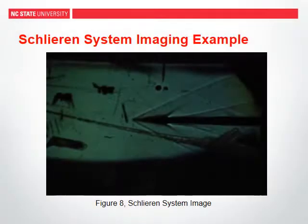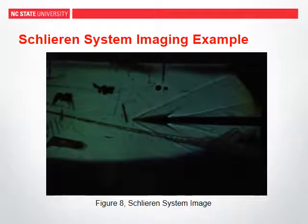An example of the image projected by the Schlieren system is shown in figure 8. The oblique shock can be seen clearly out in front of the wedge. Using this image in a graphic editing program, the angle of the shock can be measured.